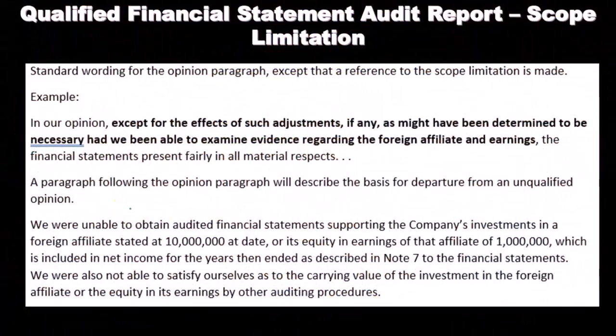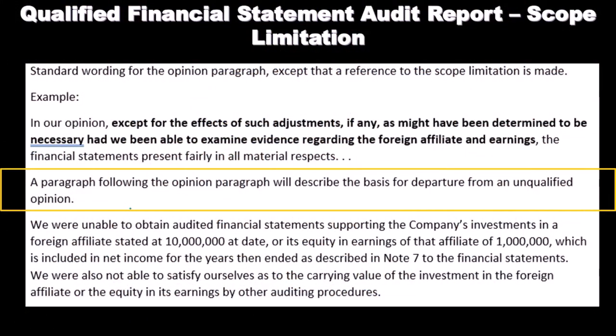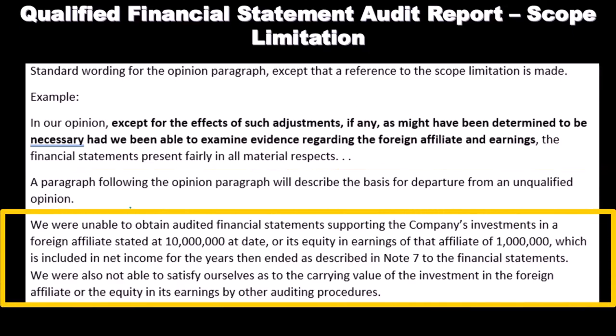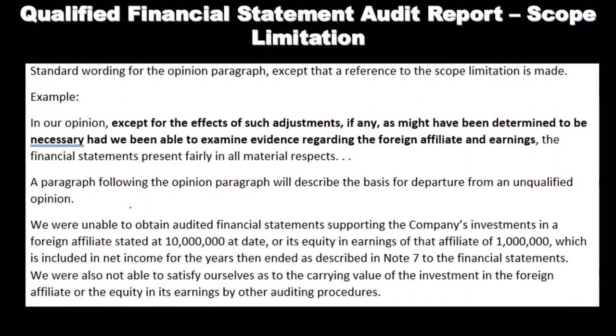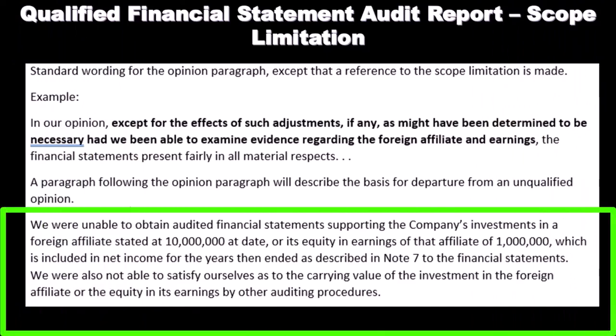A paragraph following the opinion paragraph describes the basis for departure from the unqualified opinion: 'We were unable to obtain an audited financial statement supporting the company's investment in foreign affiliates stated at $10 million, or its equity in earnings of that affiliate of $1 million included in net income for the years then ended, as described in note 7. We were also not able to satisfy ourselves as to the carrying value of the investment in the foreign affiliate or the equity in its earnings by other auditing procedures.'